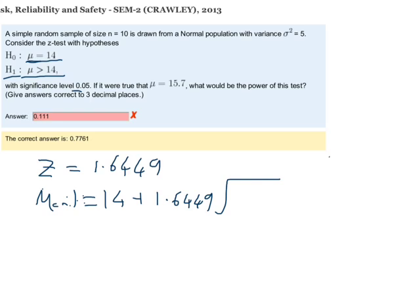Square root 5 over 10 is square root of half. So this is going to give us 14 plus 1.6449 multiplied by root 0.5, which equals 15.16.